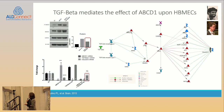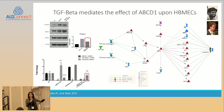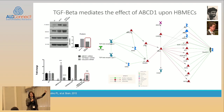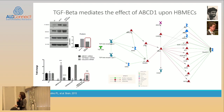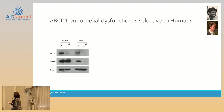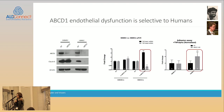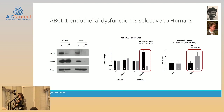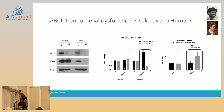We investigated what pathways ABCD1 uses to disrupt endothelial function, because those are the drug targets. If we understand how ABCD1 makes the endothelium sticky and leaky, we could potentially restore its function and prevent cerebral ALD. We found that TGF-beta is significantly involved — blocking TGF-beta pathway rescues Claudin-5 and makes the cells less sticky and less leaky. We also know the mouse doesn't get the cerebral disease; it only gets AMN. Interestingly, mouse endothelial cells are very different from human cells — when they lose ABCD1, they're not sticky and not leaky.